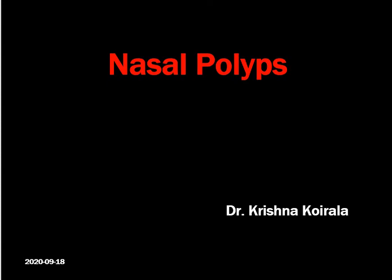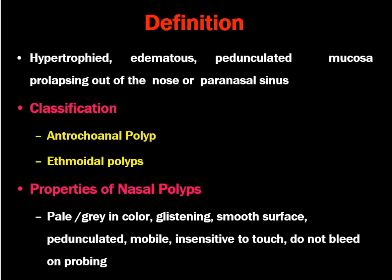Hello, today I am going to discuss about nasal polyps. Coming to the definition of nasal polyps, they are defined as hypertrophic, edematous, pedunculated mucosa prolapsing out of the nose or paranasal sinuses. They can be classified into antrochoanal polyp, which is a single entity, and ethmoidal polyps, which are multiple entities, so called ethmoidal polyps.